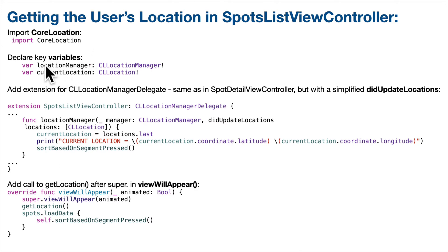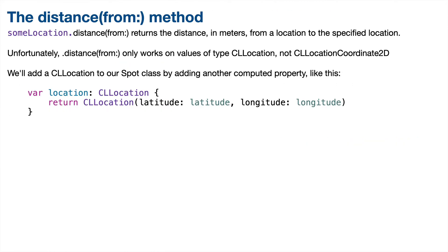We need to create two class properties. First, a location manager of type CLLocationManager — this should be pretty familiar from previous classes where we worked with user location. We're also going to need a current location as a class-wide property of type CLLocation. It's important that we have a CLLocation because this type has a method that will allow us to calculate the distance between this location and the location of any of our individual spots. That method is called distance(from:), which takes another CLLocation as a parameter.